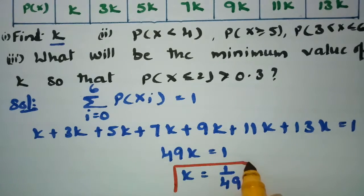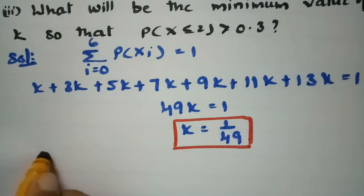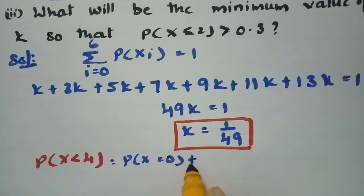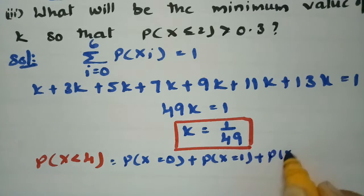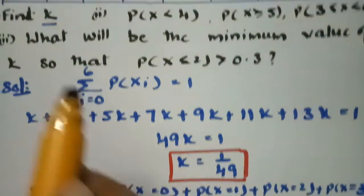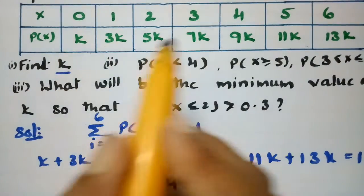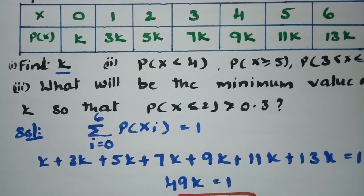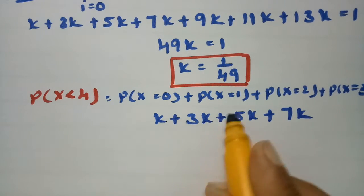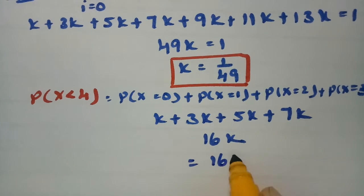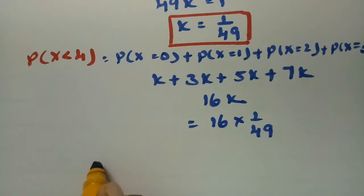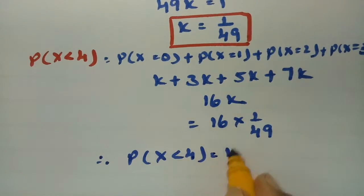Next, we find the probability of x less than 4. This means we sum probabilities for x = 0, 1, 2, and 3. The values are k + 3k + 5k + 7k = 16k. Substituting k = 1/49, we get 16/49. Therefore, the probability of x less than 4 is 16/49.